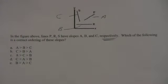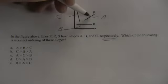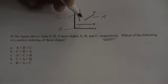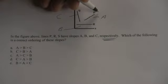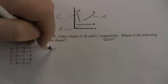So it says, which of the following is the correct ordering of these slopes? Well, out of these three lines, only P is a positive slope because the line is rising as you go from left to right. So slope A must be the biggest because it's the only one that's positive.